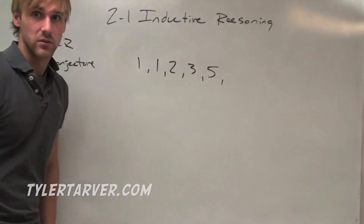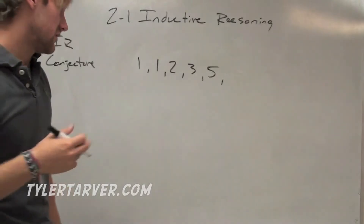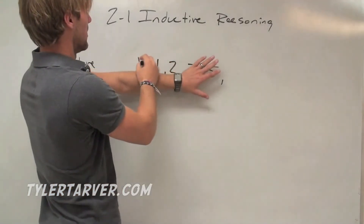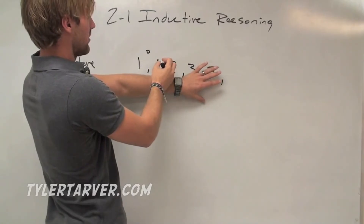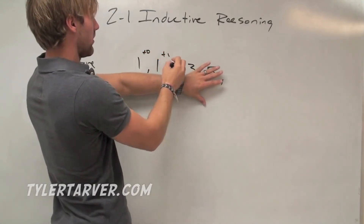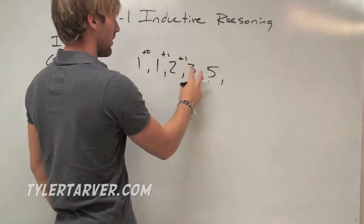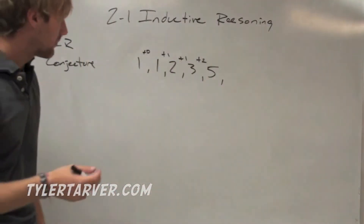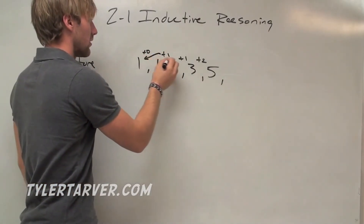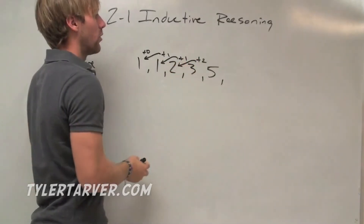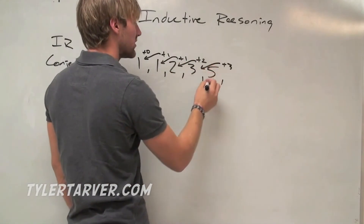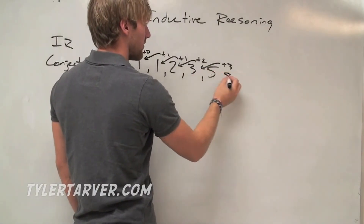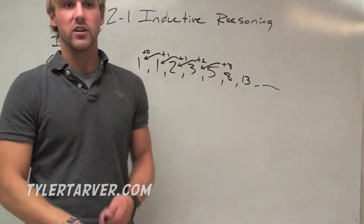Now here's one you'll probably see — these are called the Fibonacci numbers. This looks complicated at first. From term to term the differences are: you added 0, then 1, then 1, then 2. That seems like no pattern, but look back at the sequence itself. Each number is the sum of the two numbers before it. So 5 plus 3 is 8, and 5 plus 8 is 13, and so on.